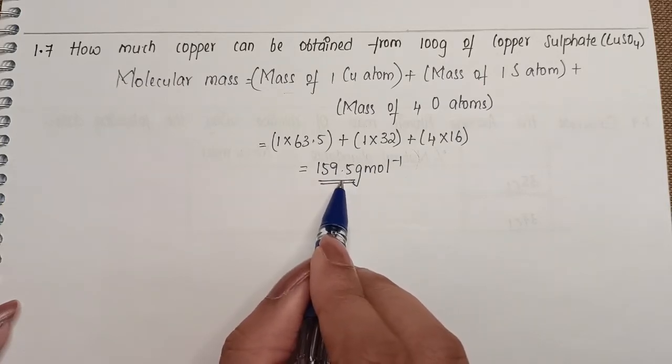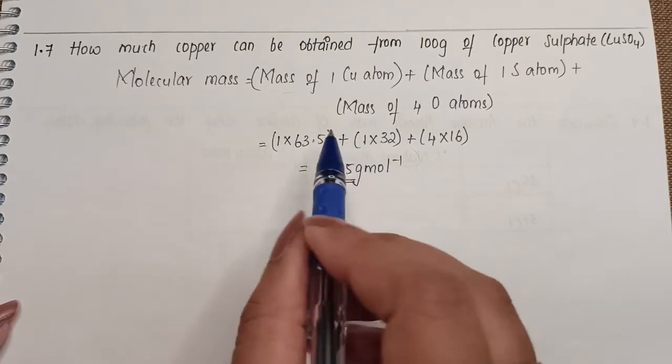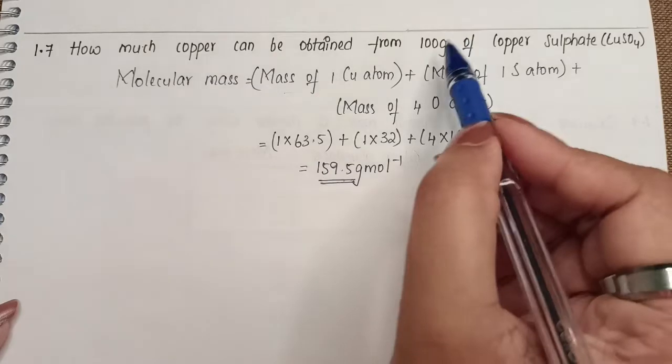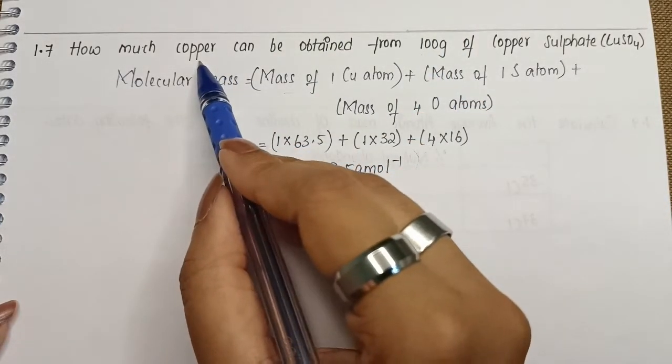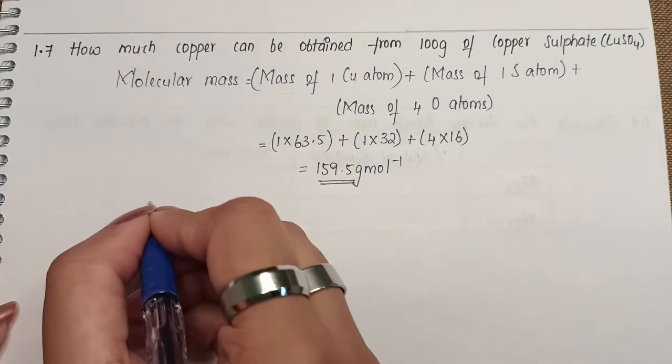So here we have this as the molecular mass of copper sulphate. Now we can write that in this much of copper sulphate, the content of copper atom is this much. Therefore, in 100 grams, how much of copper will be there? We'll use unitary method to solve it.